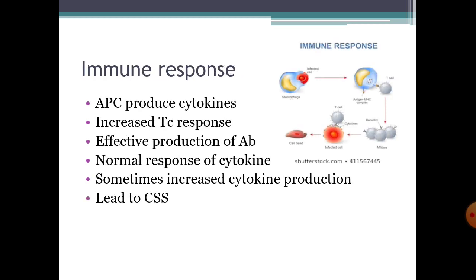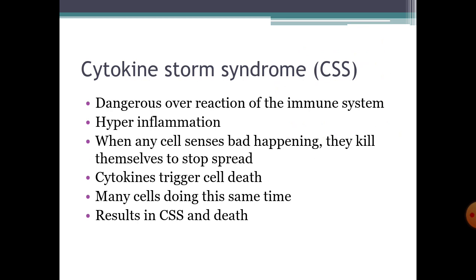The immune response occurs when antigen-presenting cells activate T-cells to produce cytokines, either by increased cytotoxic T-cell response or by effective production of antibodies. A normal cytokine response is necessary for recovery from infection. But in COVID-19, increased cytokine production occurs sometimes, which may lead to a condition called cytokine storm syndrome, or CSS.